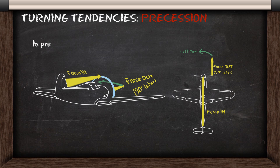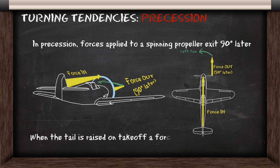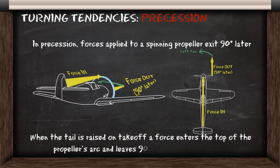In gyroscopic precession, forces applied to a spinning propeller exit 90 degrees later in the direction of rotation. This is most evident on takeoff: when you raise the tail, a force moves down the airplane to hit the top of the propeller's arc and exits 90 degrees later, causing a left yaw.